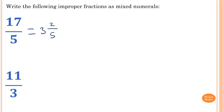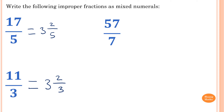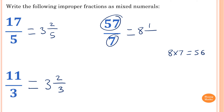For 11 over 3 — how many lots of 3 go into 11? 3 times 3 is 9, so 3 times with remainder 2. So 11 over 3 is 3 and 2 thirds. For 57 over 7 — how many lots of 7 go into 57? 7 times 8 is 56, so 8 times with remainder 1. So 57 over 7 is 8 and 1 seventh.